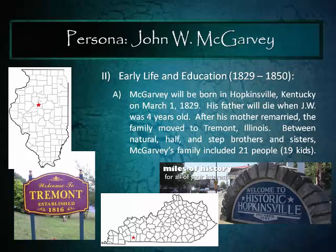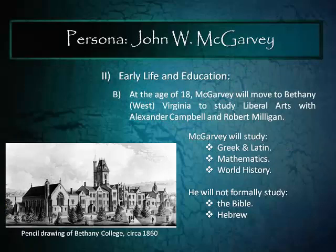McGarvey's life began in 1829 in Hopkinsville, Kentucky. His father passed away when he was about four years old, and his mother remarried and moved the whole family to Tremont, Illinois. Between natural siblings, half-brothers and sisters, and stepbrothers and sisters, there were 19 total kids and 21 total people in McGarvey's family. The Tremont home was relatively small for a family of 20-plus people, so it is unsurprising that at age 18, McGarvey decided to leave home and travel to Western Virginia to go to college.